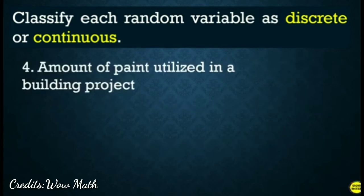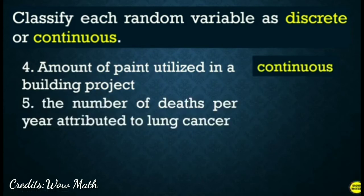Question number four. Amount of paint utilized in a building project? Amount of paint utilized in a building project? Yes, the answer is continuous. So, meron ka nga na dito na amount, yung amount na word. Another. Number five. The number of deaths per year attributed to lung cancer. The number of deaths per year attributed to lung cancer. Yes, the answer is discrete.